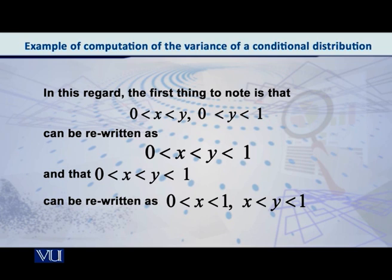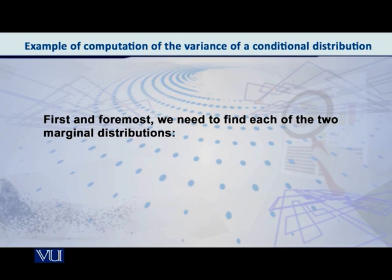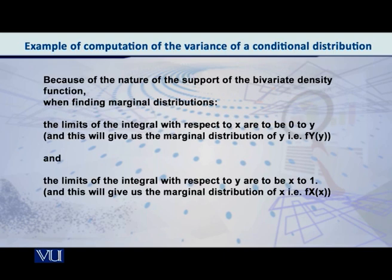After this, how do we proceed to find the variance of the conditional distribution? First and foremost we need to find the marginal distributions. We'll find the marginals and then apply the formula through which we will get the conditional distributions. So first of all, to find the marginals, remember because of that complicated domain what limits you have to apply when integrating with respect to x and what limits when integrating with respect to y.